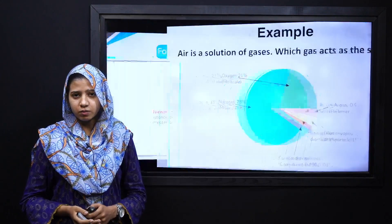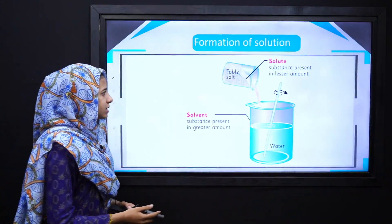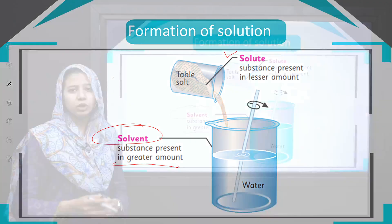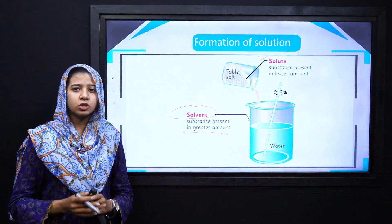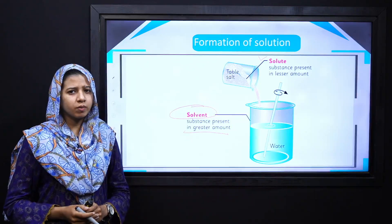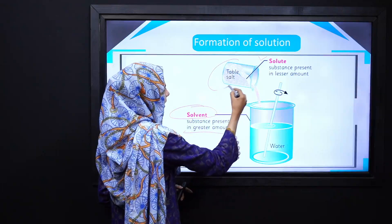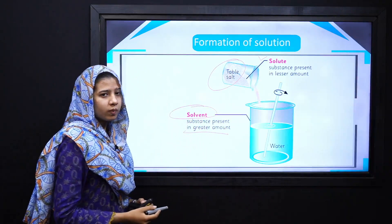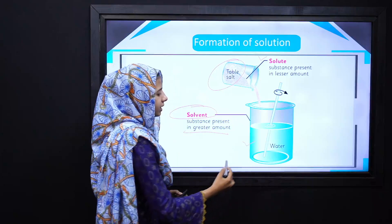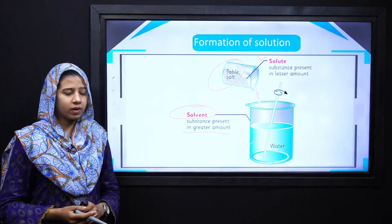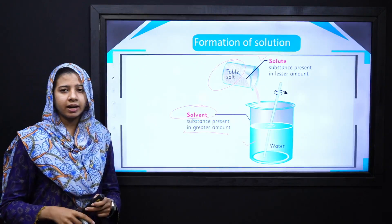Dear students, we can define solute and solvent as follows: solute is the substance that is present in the lesser amount, whereas solvent is the substance that is present in the greater amount. For example, in a water and sugar solution, sugar is the solute and water is the solvent. Similarly, table salt is the solute whereas water acts as the solvent.